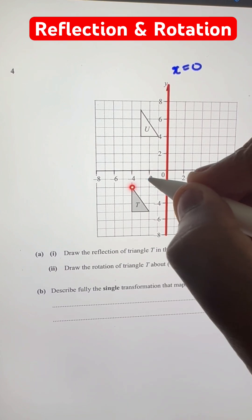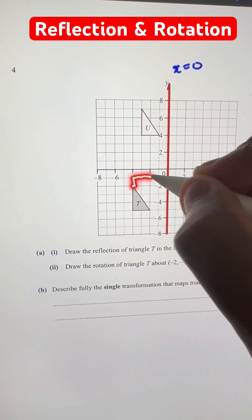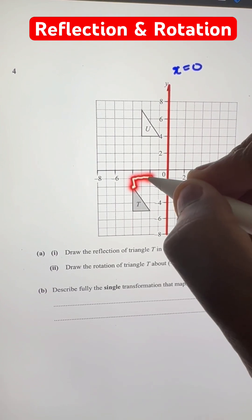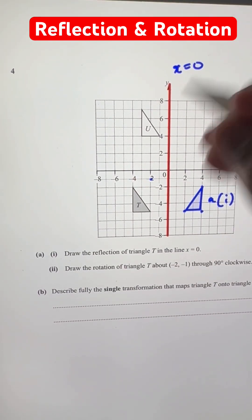So this one is originally left 2 and down 1 to get from the center to this point. Now it becomes up 2 and left 1 unit. So it goes here.